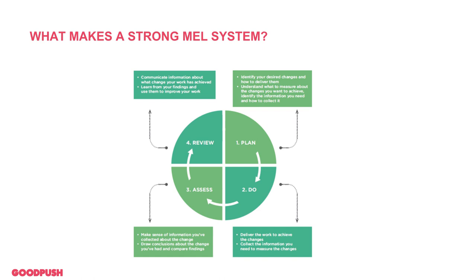What makes a strong MEL system? A good MEL system is actually like a cycle that continues — it's not a one-off activity you do once a year just to meet expectations. If you're doing it well, it's ongoing: you put in the plan, do the activities, assess them, figure out what you can learn, and then go through the process again.